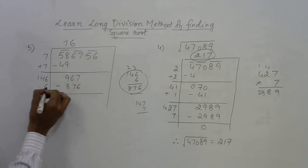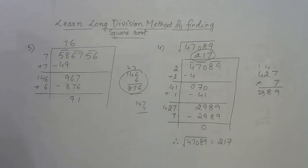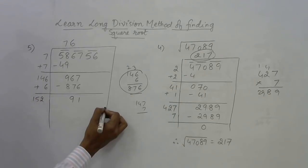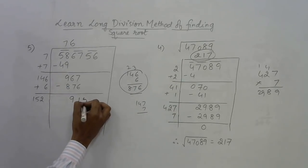You need to subtract here and add here. Just subtract—this is 1, this is 9, so 91. And now add here: 152. Final step: 152 is more than 91, so bring the next pair down—56.